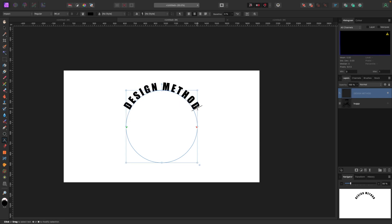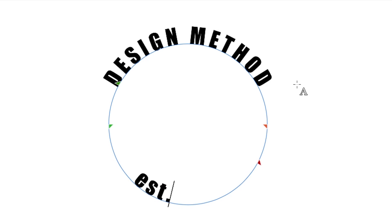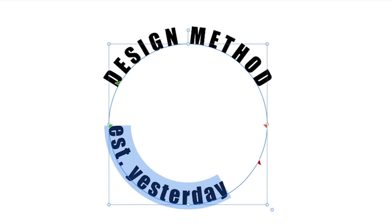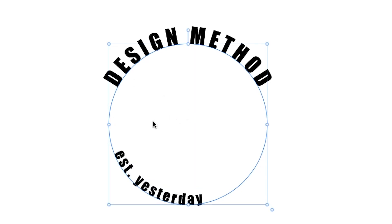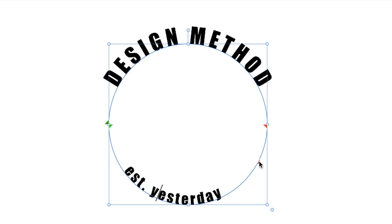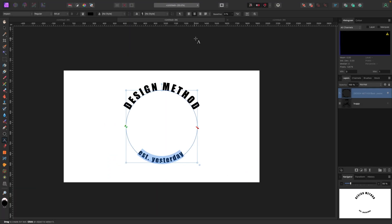I can also show you that with the cursor blinking at the end of the text, if I hit Enter it lets me type inside the circle upright. I'll type 'Established Yesterday' and make it a bit smaller. The nodes are a bit tricky — the green and end nodes here are for the outer text, and the nodes up here are for the inner text. I'll move them down and center everything so it looks good.